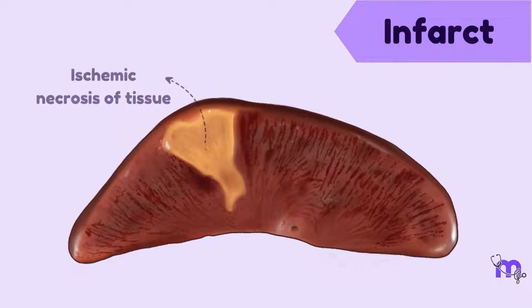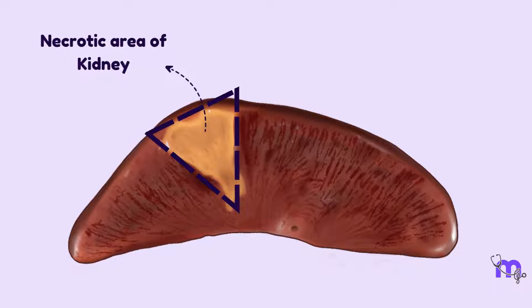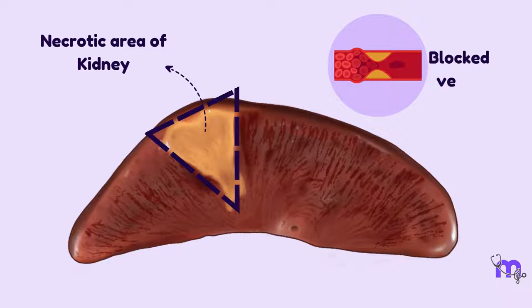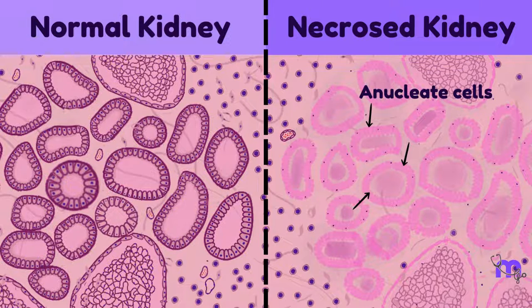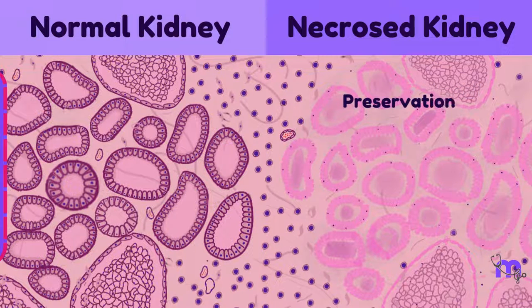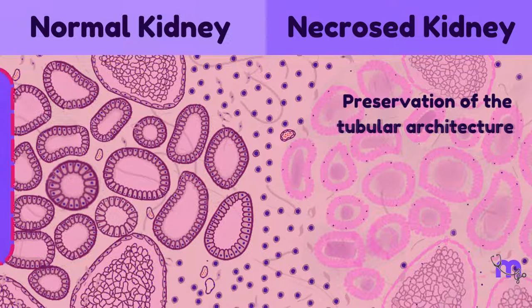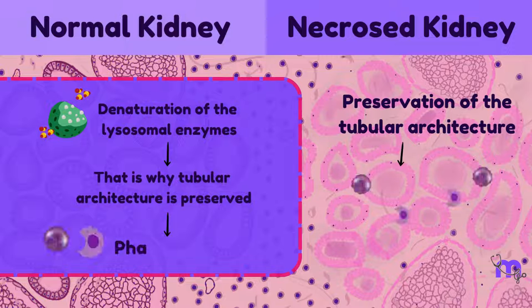An infarct is nothing but ischemic necrosis of tissue. This picture shows a wedge-shaped necrotic area in the kidney due to a blocked vessel. The characteristic feature is that the tissue architecture is preserved even after cell death. The anucleate cells preserve their outlines and appear as ghosts of the past. Even the necrotic tissue shows preservation of the tubular architecture. This is attributed to the denaturation of the lysosomal enzymes, which usually digest the cell. These cells are finally devoured by phagocytosis.